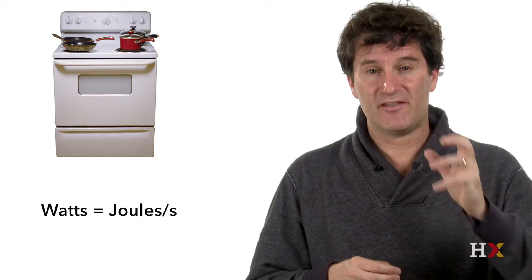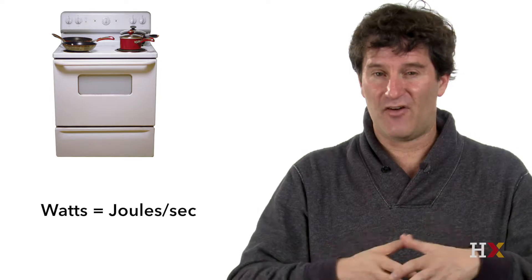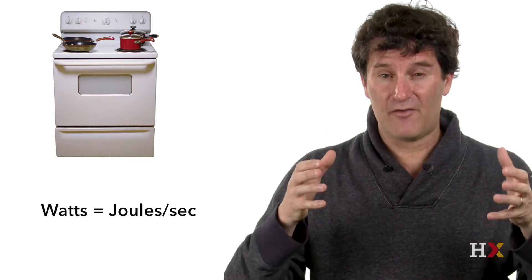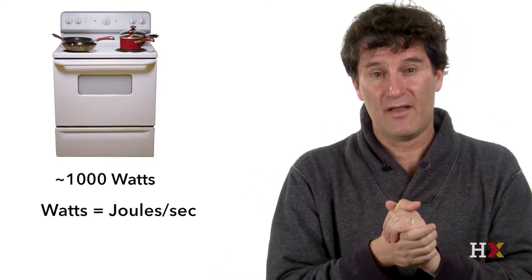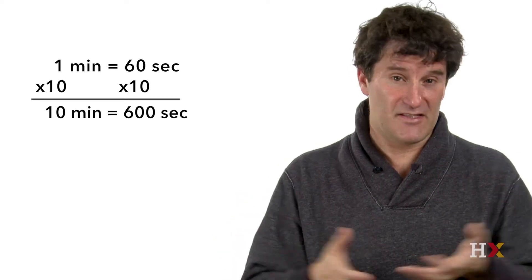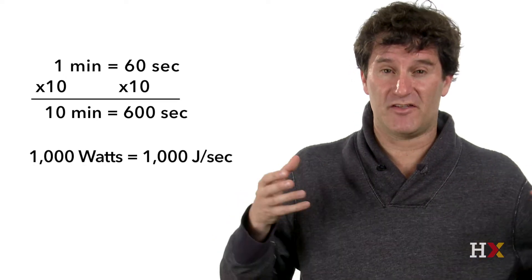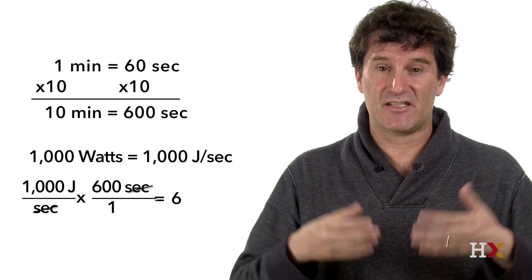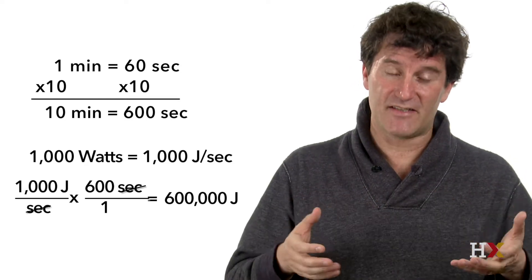Watts is a unit of power. The units of watts are joules per second. If you put food in the device for some period of time, you simply multiply the power output of the oven by the time to get how much energy the food could absorb. For example, if you put food in your oven for 10 minutes — that's 600 seconds — and your oven has 1,000 watts, then the total energy is 1,000 watts times 600 seconds, which is 600,000 joules. That's actually less than the energy in a kilogram of wood.